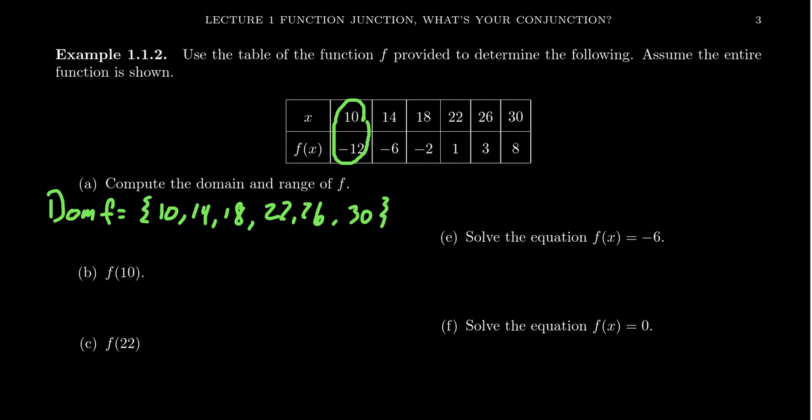In other words, looking at the first column of the table here tells us that the function evaluated at 10, f of 10, will just be negative 12, because that's what the table tells me.